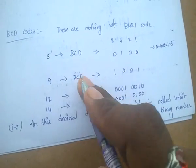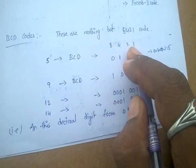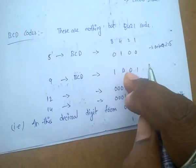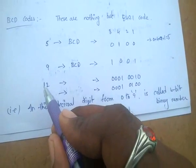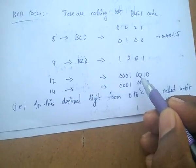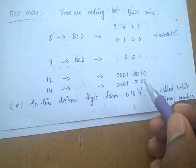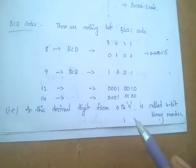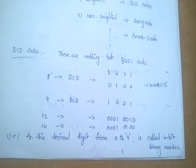Likewise, to get 9 from this code, 8 and 1 are kept to 1, and the remaining are 0. That is the way you can get 9. For 12, write binary for 1 and write binary for 2: for 1 it is 0001, for 2 it is 0010. In case of 14: 0001, and for 4: 0100. That is the way you can write BCD codes. The BCD codes are from 0 to 9 only — it is a 4-bit binary number.